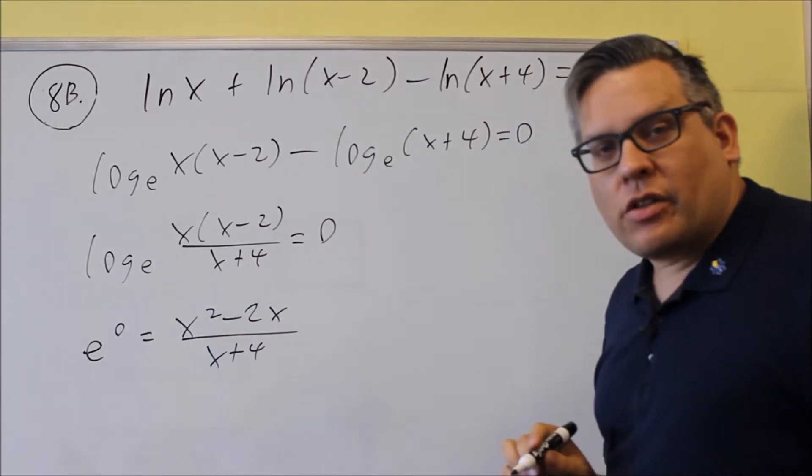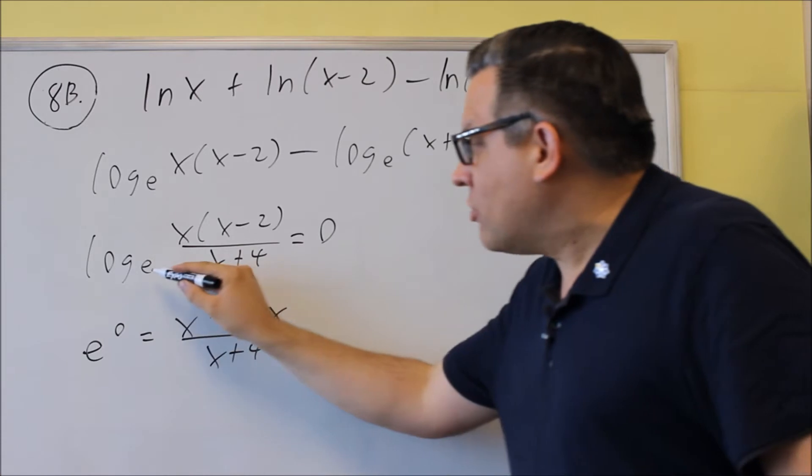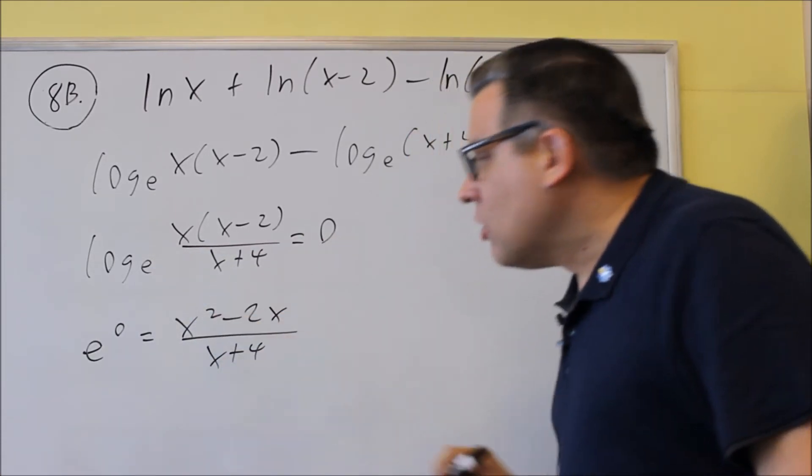So that's why I wanted to write the ln as a base e for this step here. So again, you take the base, raise it to the number after the equal sign, and it will equal all this here.